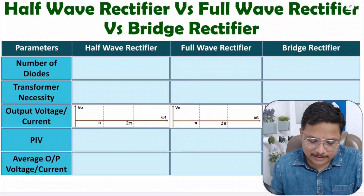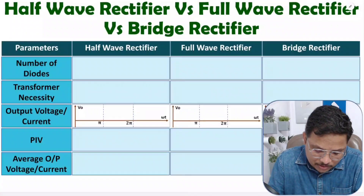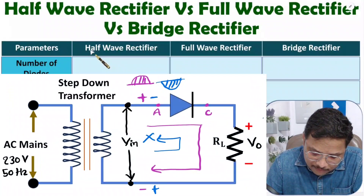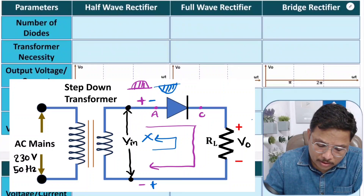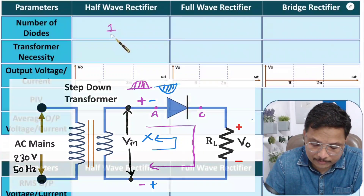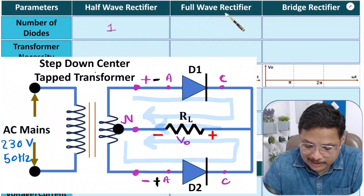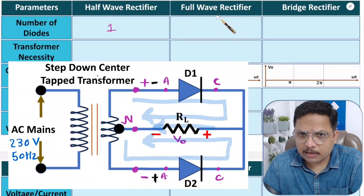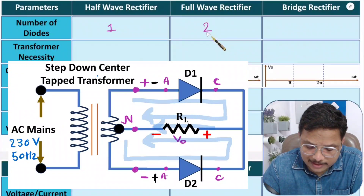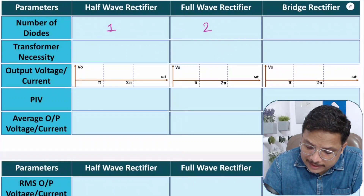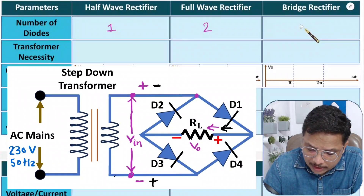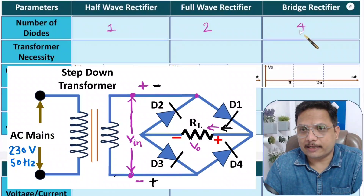Let us compare these rectifiers based on number of diodes used in the circuit. With a half wave rectifier we need only one diode. With a full wave rectifier using a center tap transformer we need two diodes. And in the case of a bridge rectifier, for a bridge connection we need four diodes in the circuit.